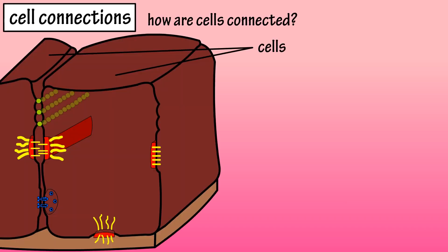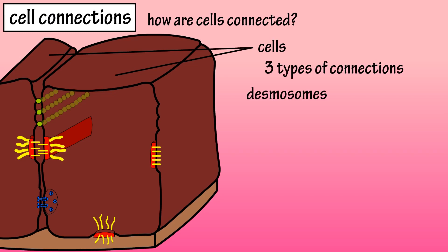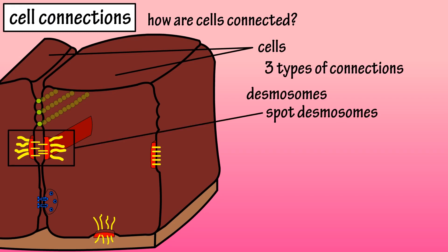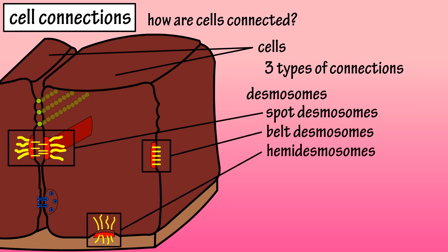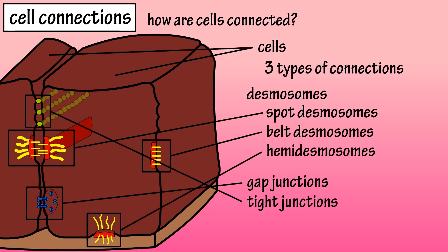Cell connections. So how are cells connected to one another? There are three major types of cell connections: desmosomes, which include spot desmosomes, belt desmosomes, and hemidesmosomes, and gap junctions and tight junctions.